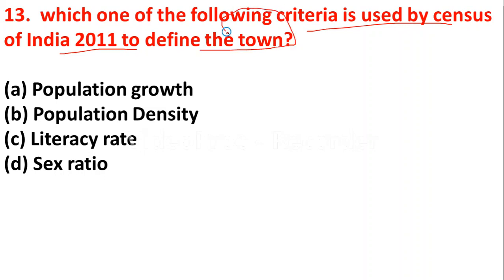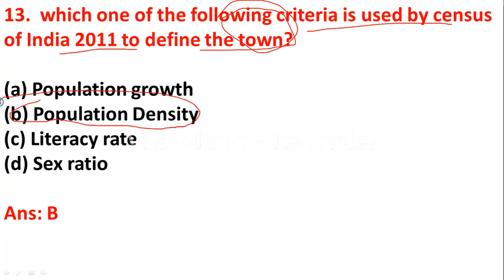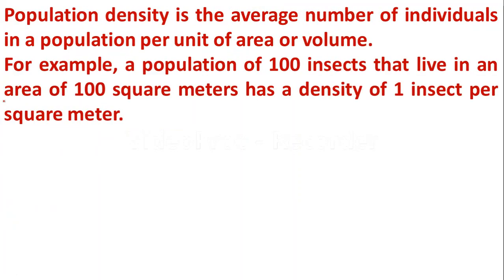Question 13: Which one of the following criteria is used by Census of India 2011 to define a town? Option A - population growth; option B - population density; option C - literacy rate; option D - sex ratio. Population density is used by Census of India 2011 to define a town. Population density is the average number of people living in a unit area.